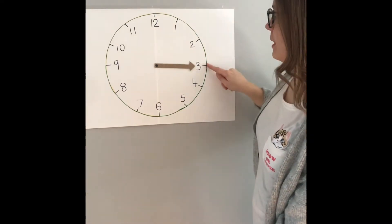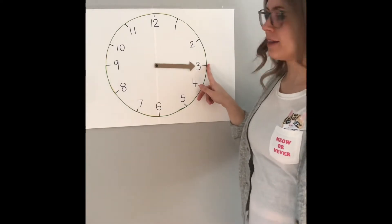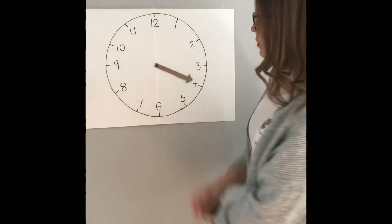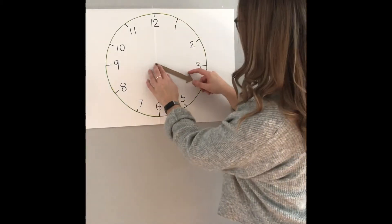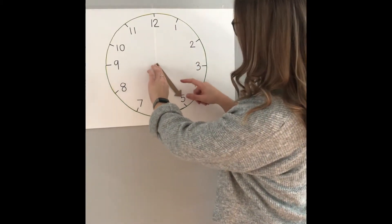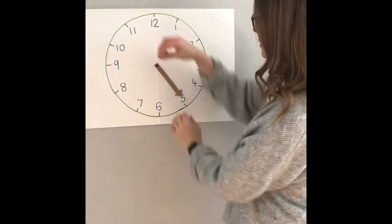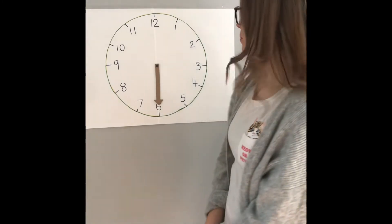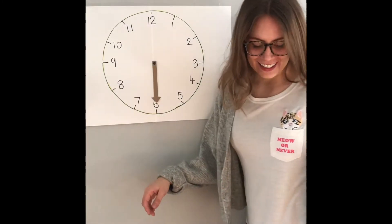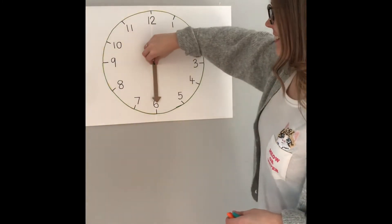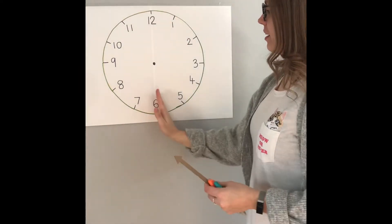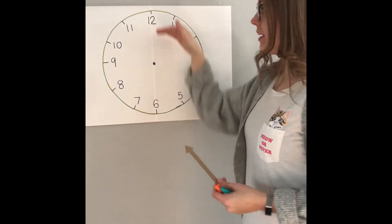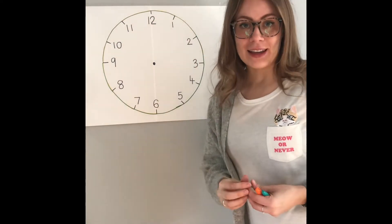So it's fifteen minutes past, but we call it quarter past the hour. Continuing on: twenty past, twenty-five past, and finally half past. So on this side of the clock it's 'past' — we say past. It's so many minutes past the hour.